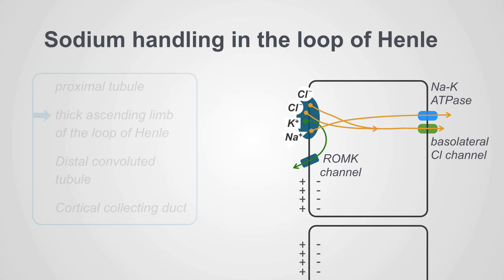Sodium and chloride are at much higher concentrations in the tubular fluid. As this molecule runs and transports these ions across the cell membrane, potassium would be quickly depleted. In order to avoid that, potassium is recycled out of the cell through something called the ROM-K channel.